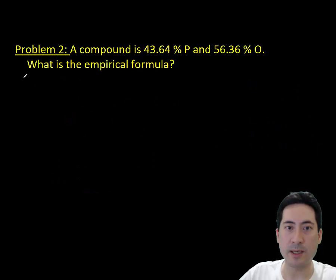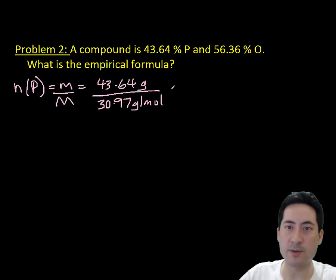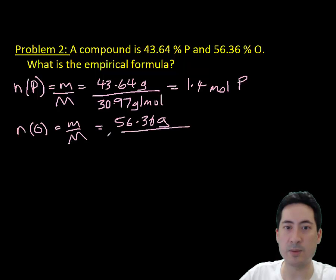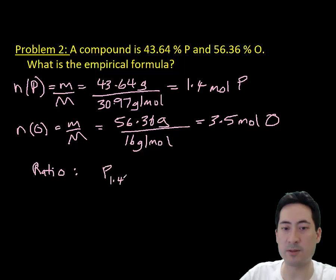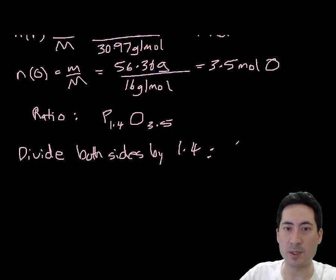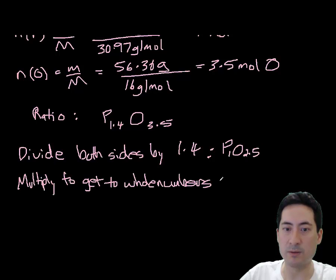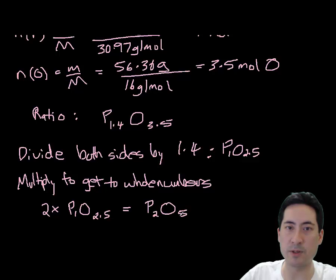Going on to a second problem, if we have 43% phosphorus and 56% oxygen, again, we convert that to grams to work out the number of moles. As you'll see with some of these other ones, if it doesn't work out to a simple whole ratio, you need to either times by some number to get that. So in this case, timesing by two would eliminate that 0.5. So the answer is P2O5.